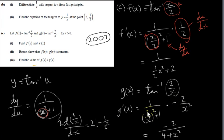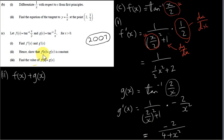Squaring out gives 4 over x squared, and 4 over x squared multiplied by x squared is 4, while x squared times 1 is x squared — so the denominator becomes x squared plus 4. Multiplying by minus 2 on top gives g prime of x equals minus 2 over x squared plus 4.